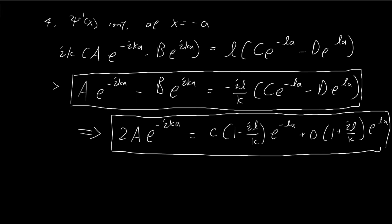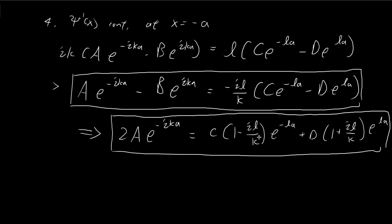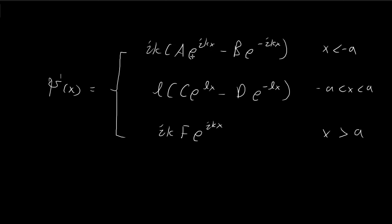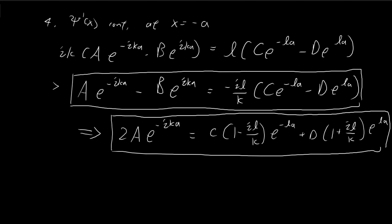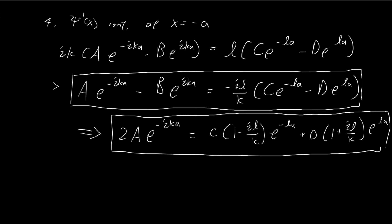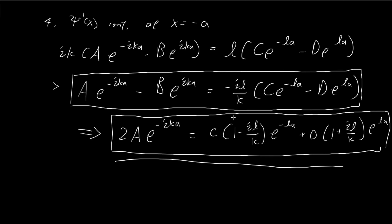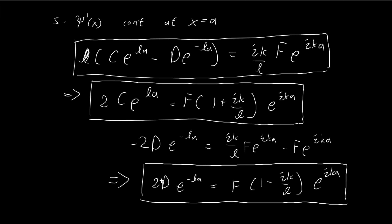To briefly summarize: using the continuity requirements for ξ(x) and ξ'(x), we've derived a set of expressions relating the constants a, b, c, and d. Using these expressions, we will derive the transmission coefficient in the next video. The key expressions to remember are the combined one marked with the double arrow, along with the two expressions derived from continuity at x = a.